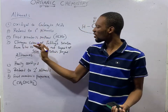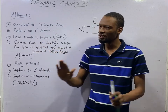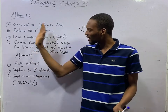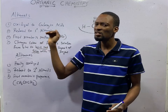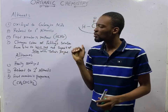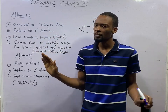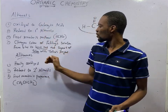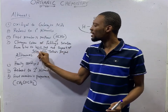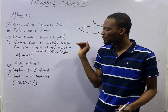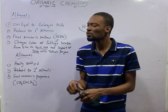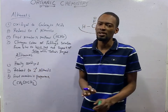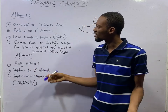Aldehydes will change the color of Fehling's solution from blue to brick red, but Ketones will not — they do not react with Fehling's solution. The same Aldehydes will give a deposit of silver when they react with Tollens' reagent, but Ketones do not react with Tollens' reagent. These are the two tests to distinguish Aldehydes and Ketones.